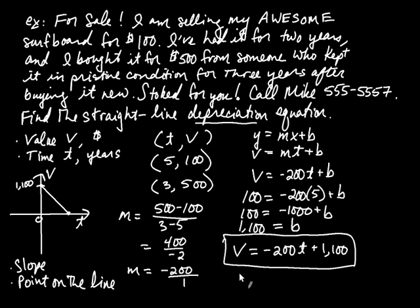So how would you find that? How would you find the time when the board has no value? To do that, you could set the value equal to zero. So you could ask yourself, when is the value equal to zero? And so if you do that, you're going to be solving the equation: zero is equal to negative 200 times T plus 1,100. When you get that, that's going to give you some time. And that is your T-intercept. So this is how you generally find the equation of lines in modeling.